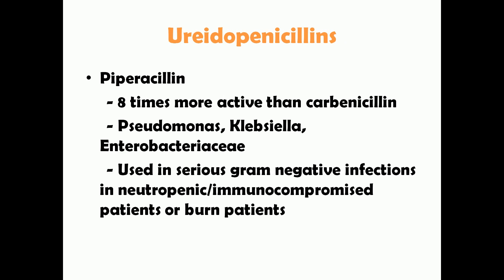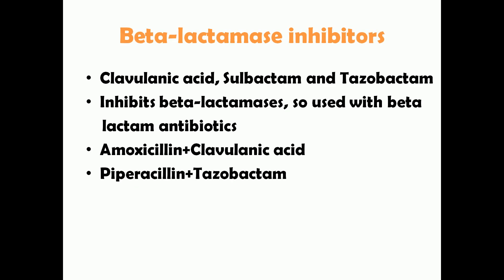Ureidopenicillins include piperacillin, which is about eight times more active compared to carbenicillin. It is active against Pseudomonas, Klebsiella, and Enterobacteriaceae, making it a better alternative to carbenicillin for those organisms. Piperacillin can be used in serious gram-negative infections in neutropenic, immunocompromised, or burn patients.